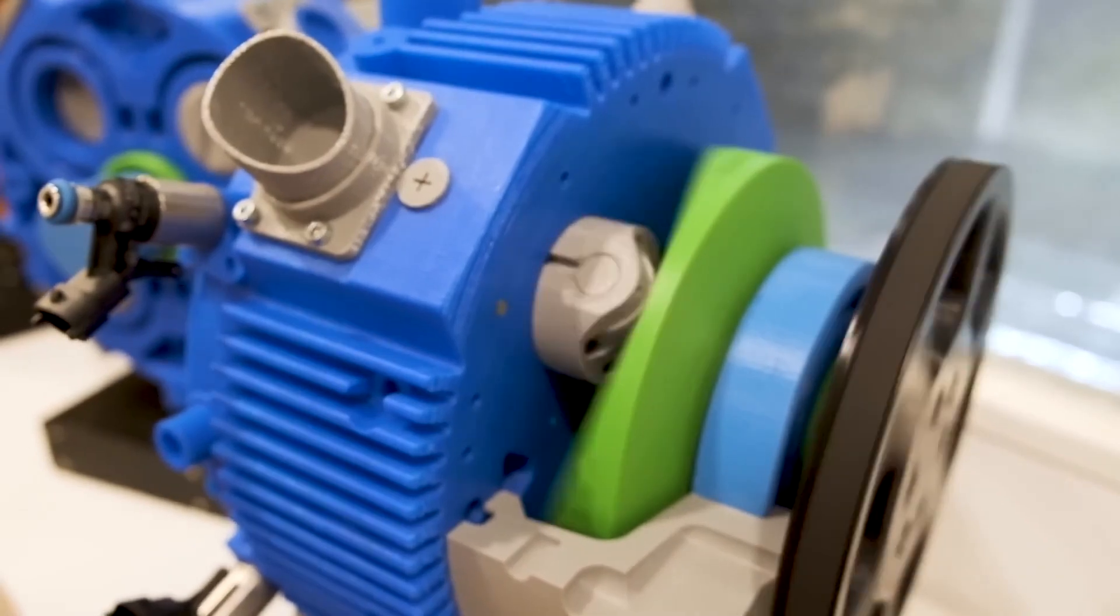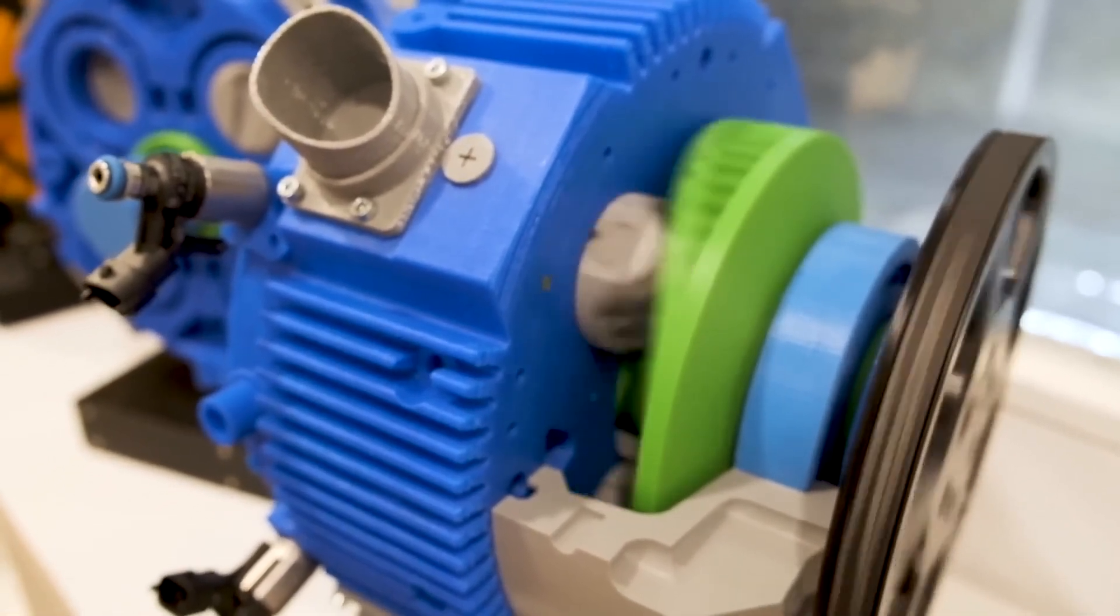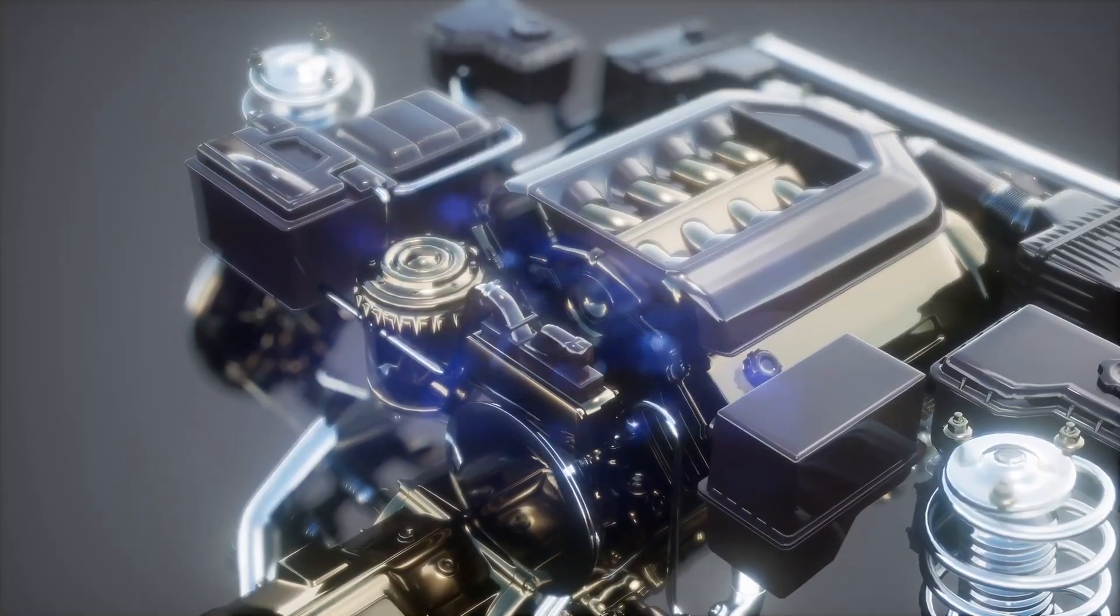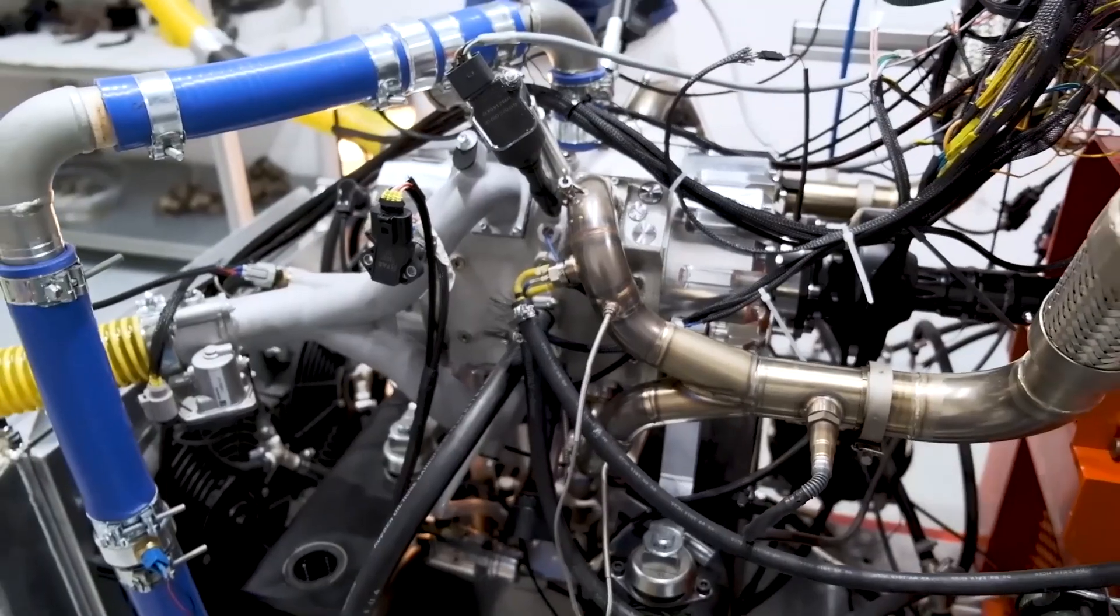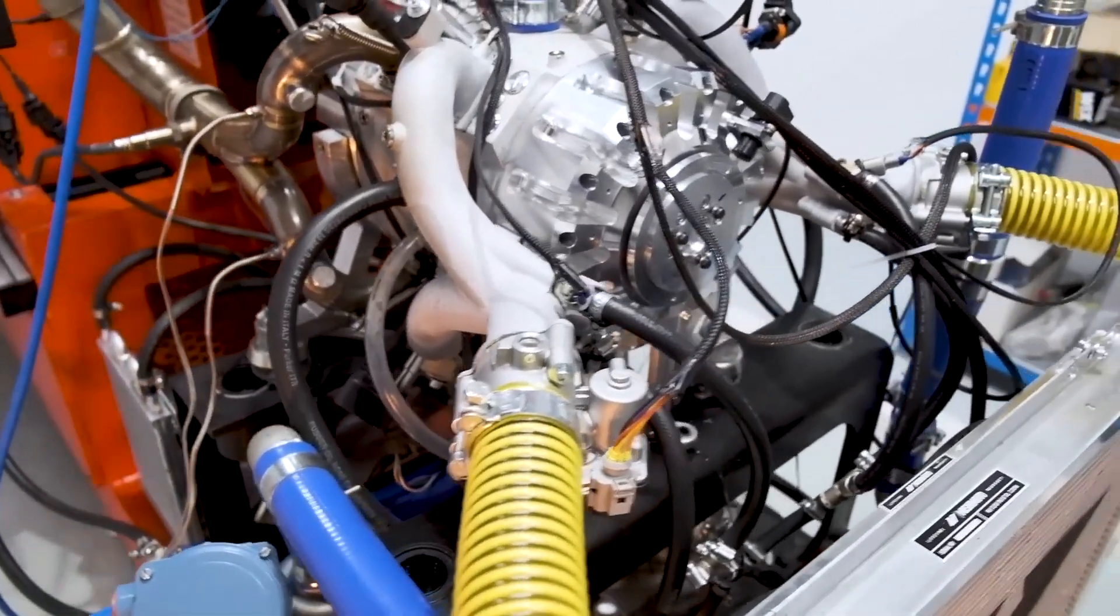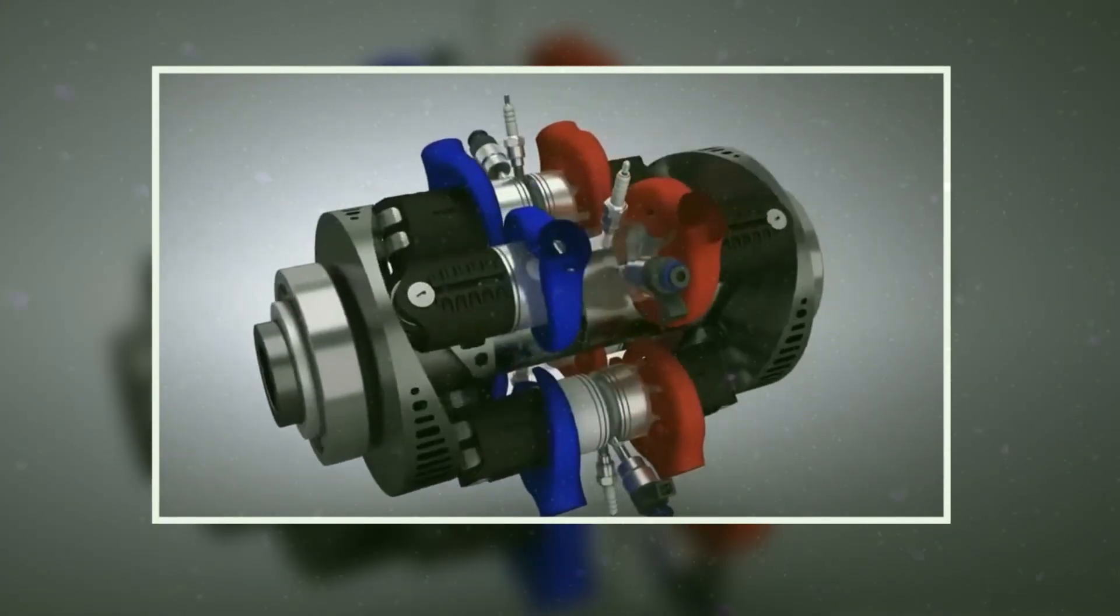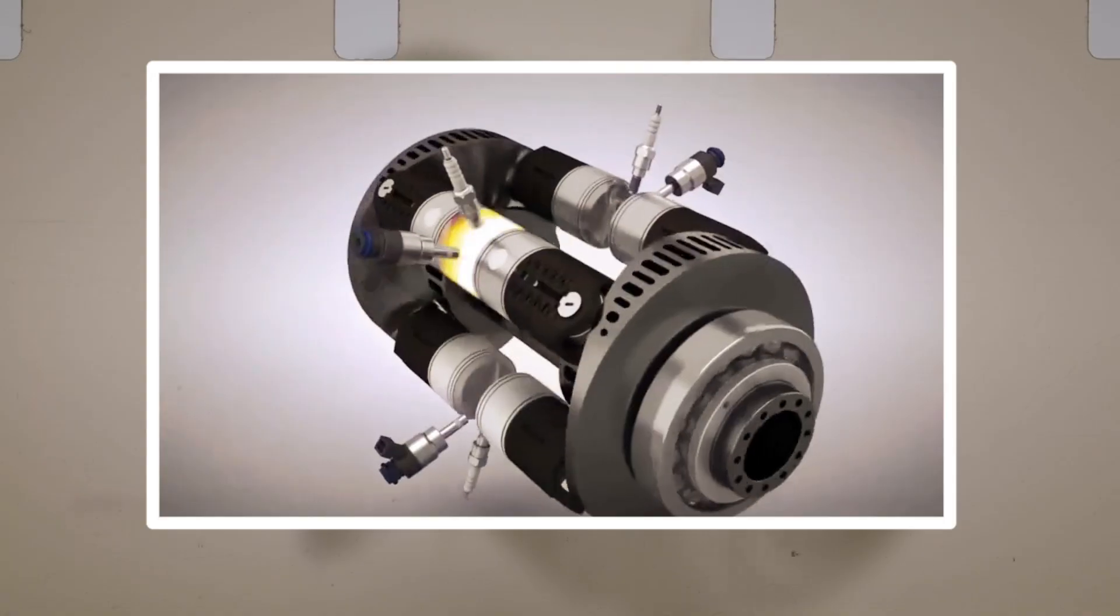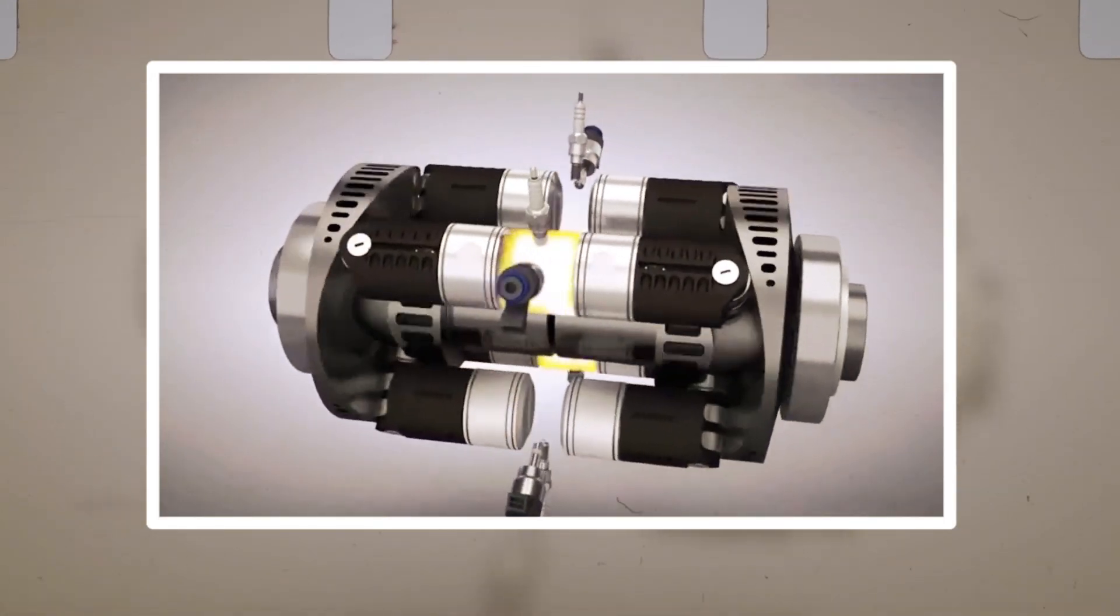To address the problem of exhaust gases contaminating the intake, the INN engine employs a scavenging process, akin to traditional engine designs. Initially, the exhaust port is exposed, allowing high-pressure exhaust gases to vacate the combustion chamber. This rapid exit generates a low-pressure vacuum that sucks in fresh air from the intake chamber, creating a clean environment for the next combustion cycle.